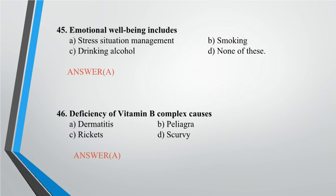Question 46: Deficiency of vitamin B complex causes — A. Dermatitis, B. Pellagra, C. Rickets, D. Scurvy. Answer: A.